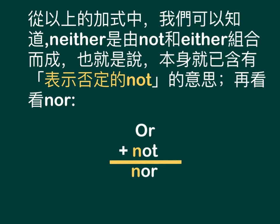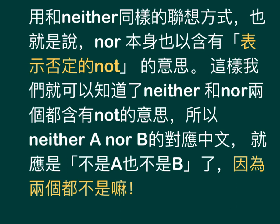Now let's look at 'nor': Or + not = nor. Using the same association method as with 'neither', we can see that 'nor' also contains the meaning of negation — 'not'. So both 'neither' and 'nor' carry the meaning of 'not', which is why neither A nor B means 不是A也不是B (neither one is).